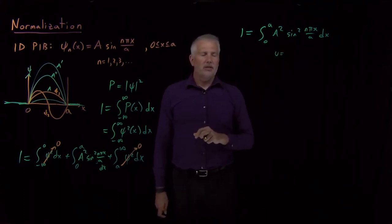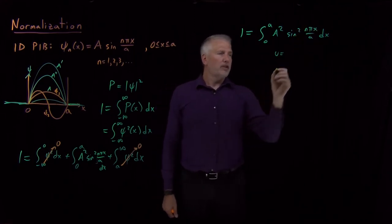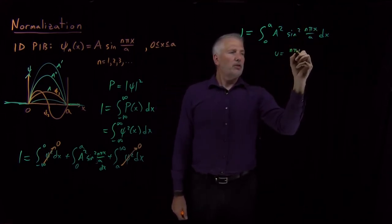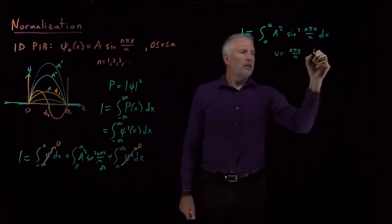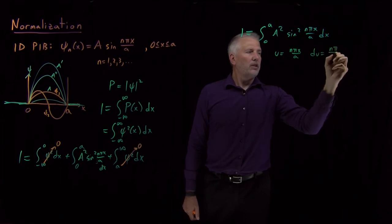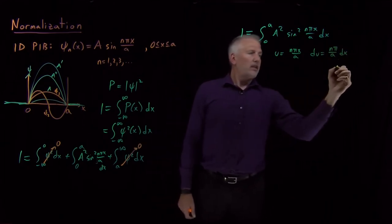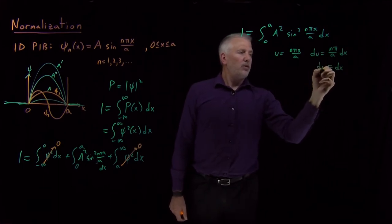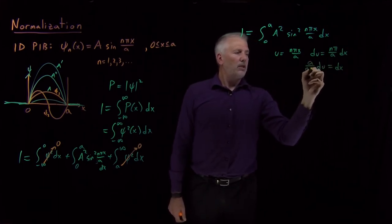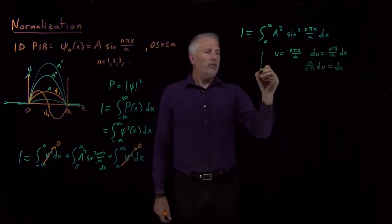Integral of sine squared doesn't look too tough, but to get rid of this messy stuff inside the trig function, let's use substitution. So if I let u be nπx over a, so that du is nπ over a times dx, and dx is du, I'll move the a and the nπ to the other side. That lets me rewrite my integral.